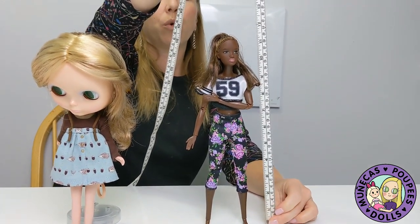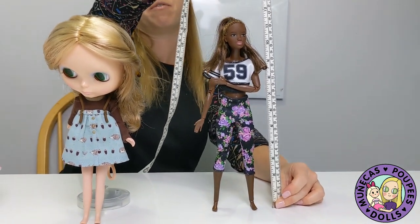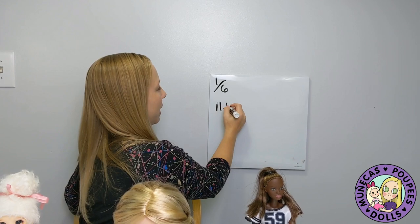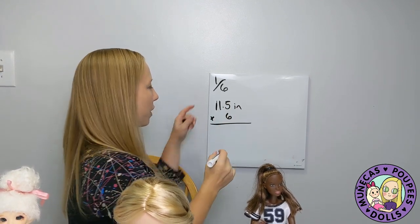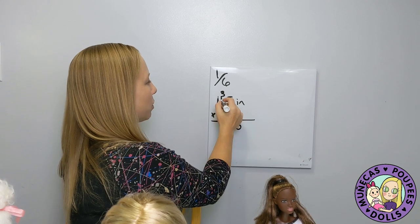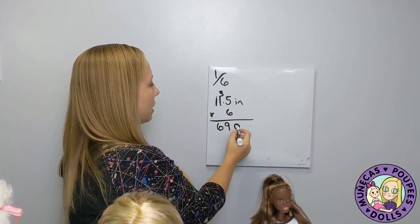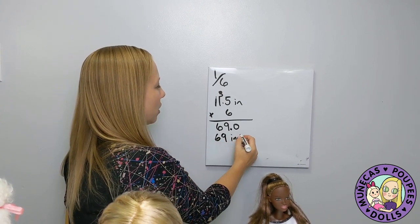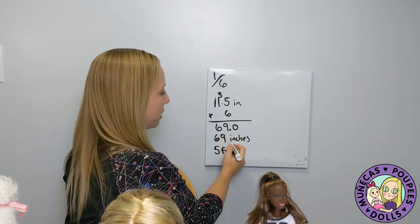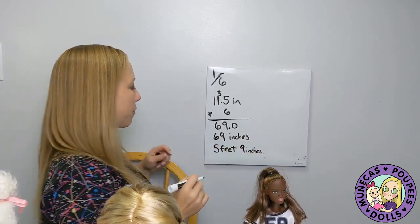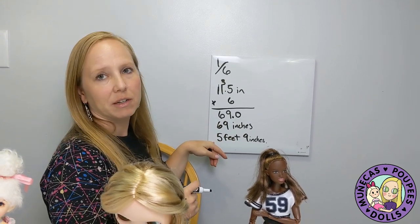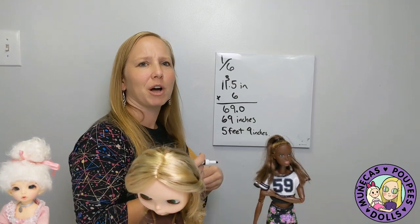Barbie is well known for being 11 and a half inches tall, which is roughly 29 centimeters. In 1/6 scale: 11.5 inches times 6 — six times five is 30, six times one is 6, plus 3 is 9 — she'd be 69 inches, which is five feet nine inches tall.